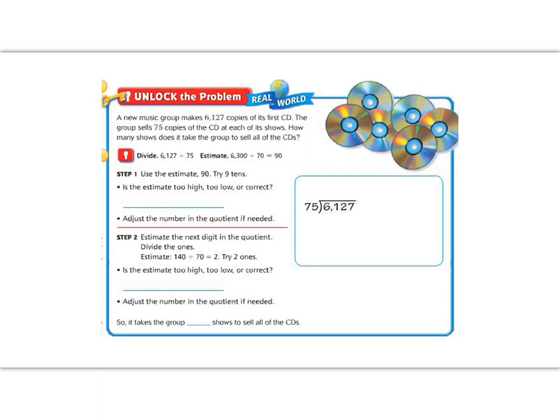Let's unlock the problem. A new music group makes 6,127 copies of the first CD. The group sells 75 copies of the CD at each of its shows. How many shows does it take the group to sell all of the CDs? So the first thing we're going to do is estimate. So instead of 6,127, we're going to round to 6,300, and we're going to round 75 to 70. And if we look at the first two digits, 7 goes into 63 nine times.